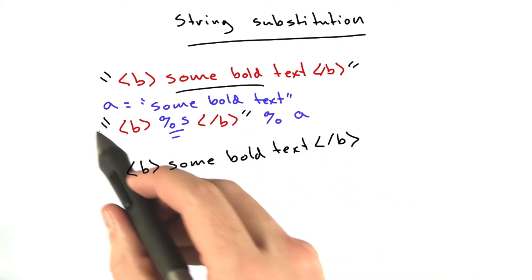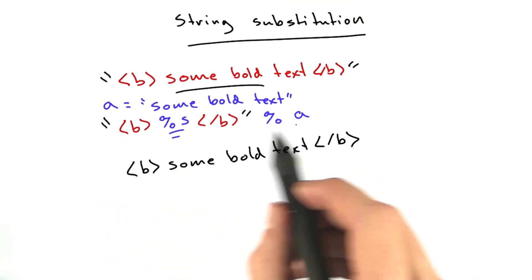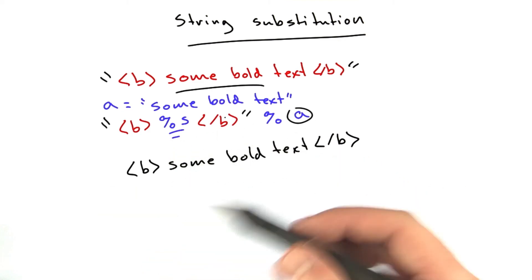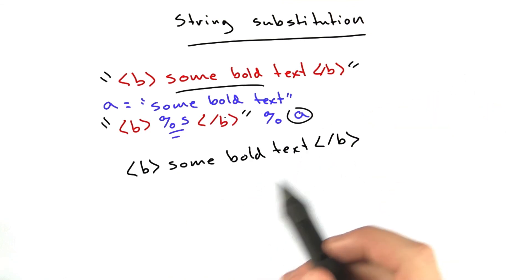This is really convenient because we could have a function that just substitutes one variable into a string, and then we don't have to build that string over and over and over again. Okay, so time for a quick quiz.